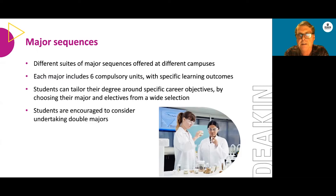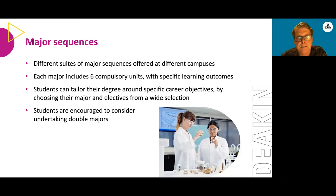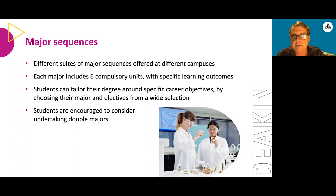For instance, if you do a major in chemistry, you'll do six chemistry units in second and third year, building on the first year core units in chemistry, and that will qualify you to work in the area of chemistry when you leave Deakin University. Students have the opportunity to tailor the degree through the selection of different majors and electives, focusing on particular desired career outcomes. Students are encouraged to undertake double majors, particularly in the single degree, as that can really strengthen their capacity to get employment once they finish.